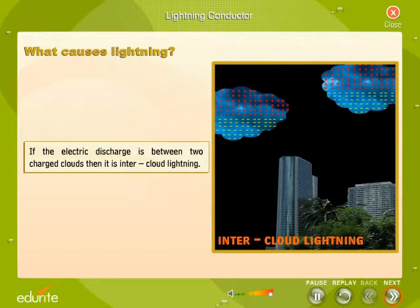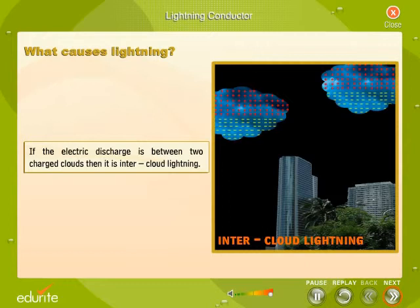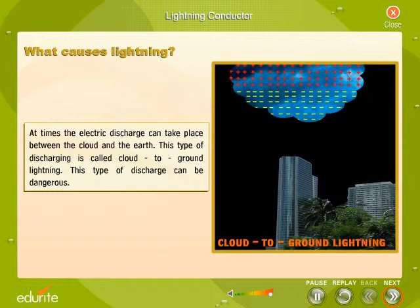If the electric discharge is between two charged clouds, then it is inter-cloud lightning. Intracloud and inter-cloud lightning is a common sight during a thundershower. At times, the electric discharge can take place between the cloud and the earth. This type of discharging is called cloud-to-ground lightning.